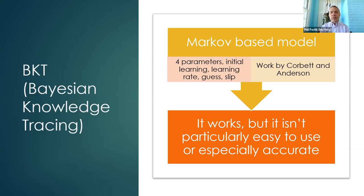Bayesian Knowledge Tracing has its advantages — it's rather simple to think about because it only has four parameters: initial learning, the learning rate, the chance a student guesses right, and the chance they slip. But it's not particularly easy to use in a lot of ways because it isn't something simple like regression. And it's not particularly accurate because with only four parameters, there are a lot of learning effects it doesn't capture — for instance, forgetting, which is very important in many learning paradigms and is very difficult to build into BKT because of its structure.